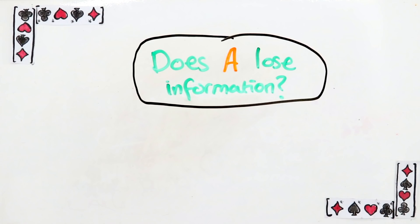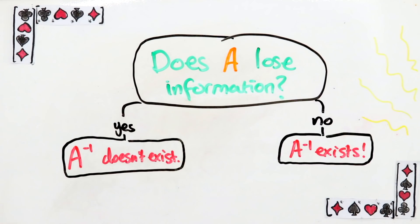Just ask, does A lose information? If yes, then sorry, A inverse doesn't exist. But if no, then A inverse does exist.